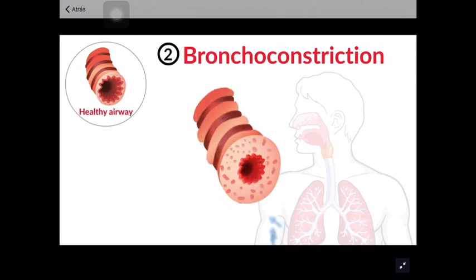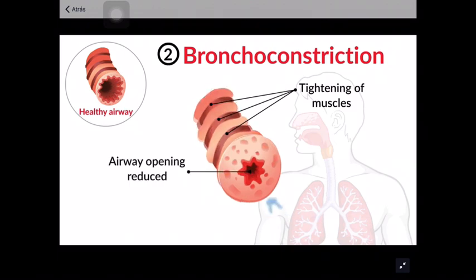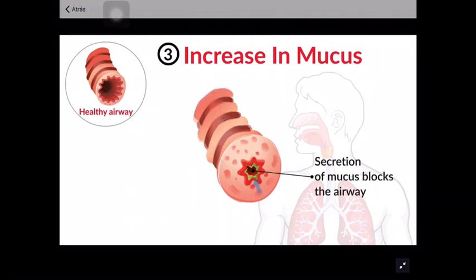The second change is bronchoconstriction. This is the tightening of muscles that surround your airways, further reducing the opening. The third and final change that occurs is an increase in the secretion of mucus, which further blocks the airway.